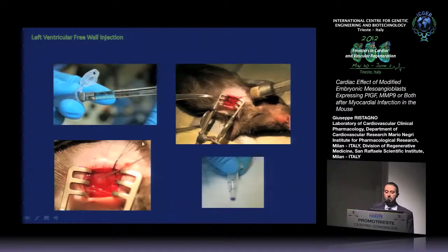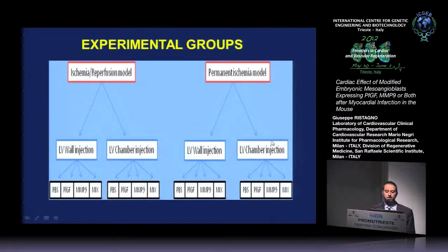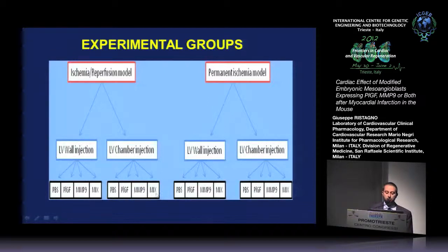Here is some detail about the free wall injection. Some cells were also injected together with colored microspheres in order to retrieve the area of injection four weeks later. These are some images about the left ventricle chamber injection, which was performed without reopening the thorax again. The experimental groups included ischemia reperfusion and permanent ischemia, with either left wall injection or left ventricle chamber injection, receiving PBS or MAPs expressing PLGF, MMP9, or both.